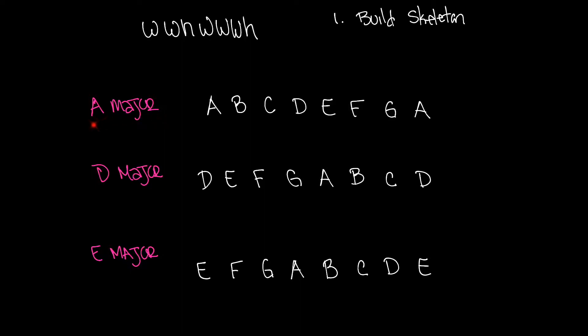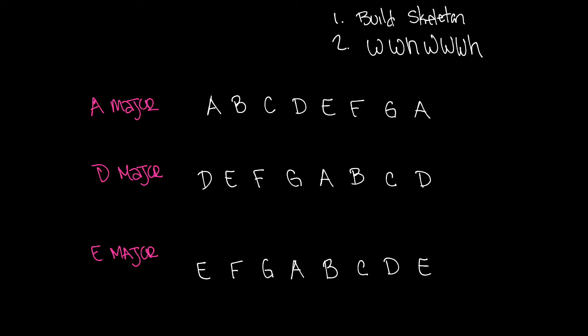The skeleton means writing out the natural notes alphabetically for the key. For A major: A B C D E F G A. For D major: D E F G A B C D. For E major: E F G A B C D E. The skeletons have no sharps or flats — just natural notes. Rule two is to apply the whole-whole-half-whole-whole-whole-half pattern.